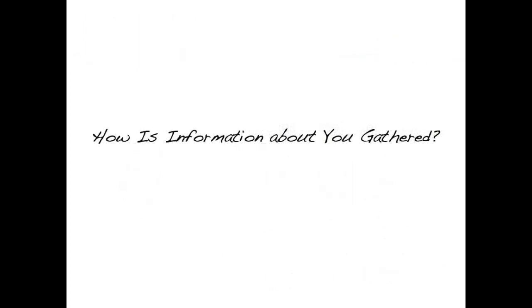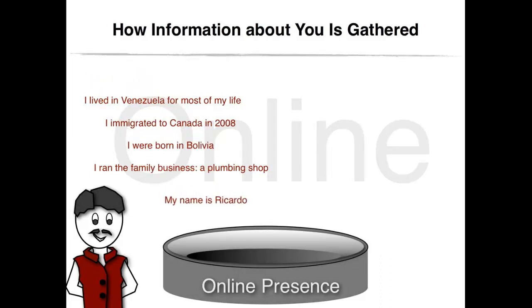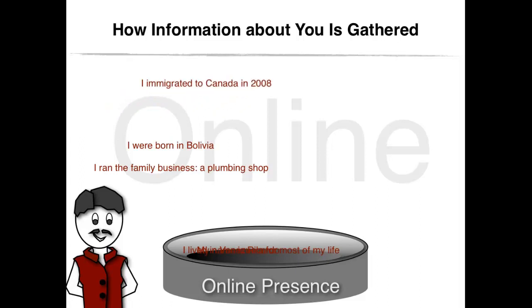Three kinds of information can be gathered about you when you are using social network sites: information that you shared, information that others shared about you, and information that was gathered through electronic tracking. On one hand, you intentionally shared your biographical information, which includes and is not limited to your name, gender, age, education, employment history, hometown, places that you visited, and more.